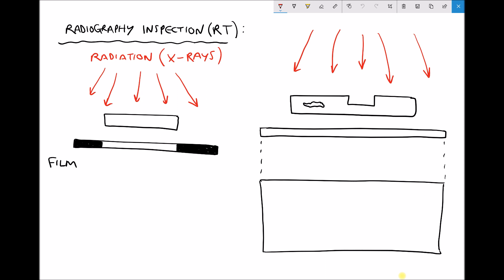On the left-hand side we have an example of how this works for a component that doesn't have any flaws or defects. And what we have is a source of the radiation and radiation is basically electromagnetic waves or electromagnetic energy and those waves are emitted such that they're directed towards a film.